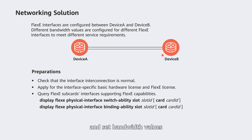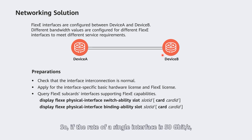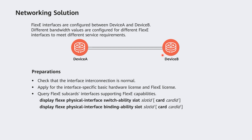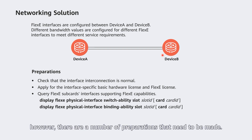To ensure the SLA of each service, configure flexi interfaces between the devices and set bandwidth values to 4 Gbps, 15 Gbps, 20 Gbps, and 30 Gbps. Since the rate of a single interface is 50 Gbps, each device requires two interfaces to carry the four types of services.